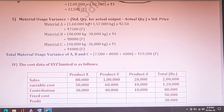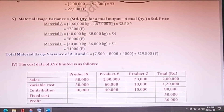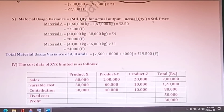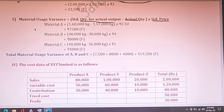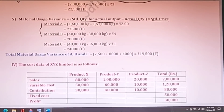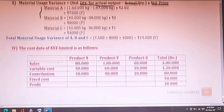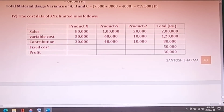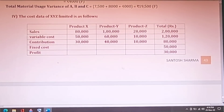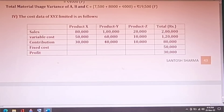Material usage variance formula is (standard quantity for actual output minus actual quantity) multiplied by standard price. All information is given in the question — the key lies in knowing the formulas, without which it is very difficult to solve.